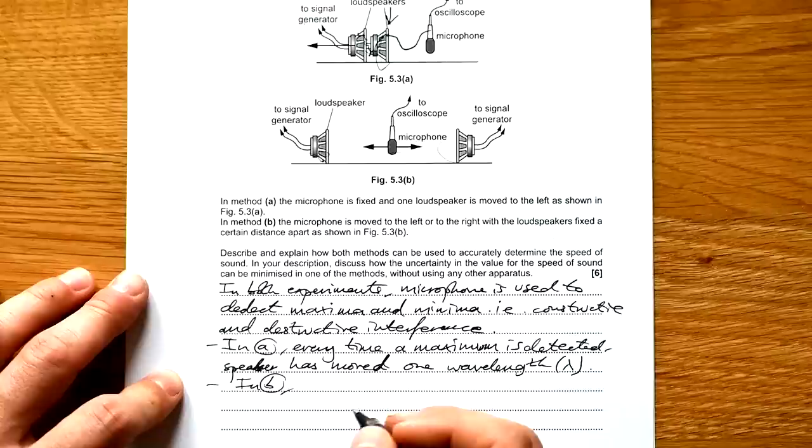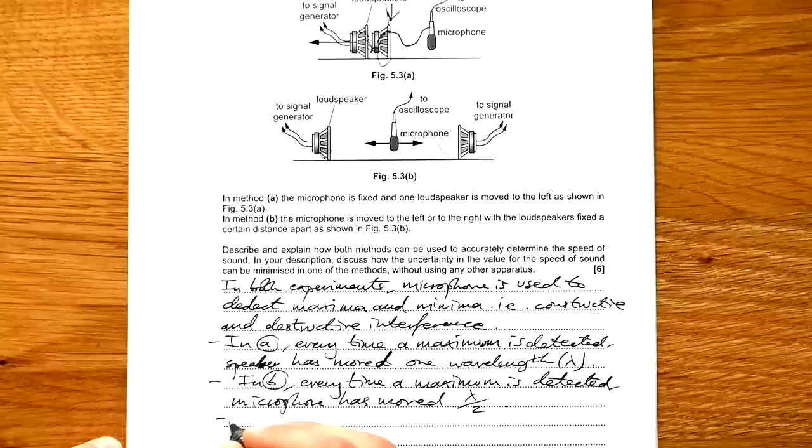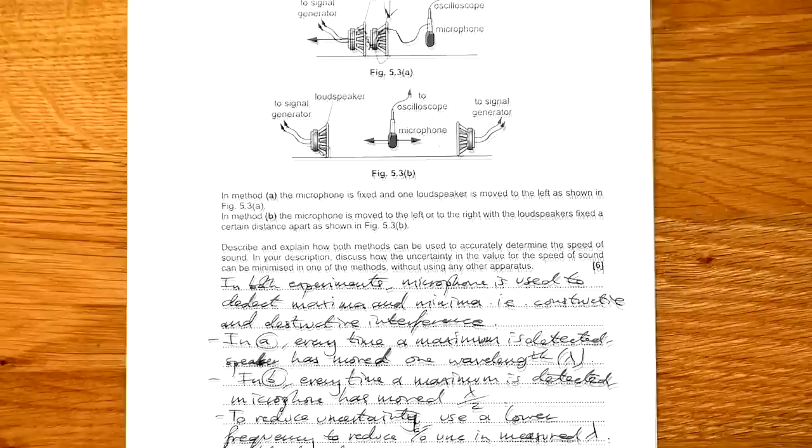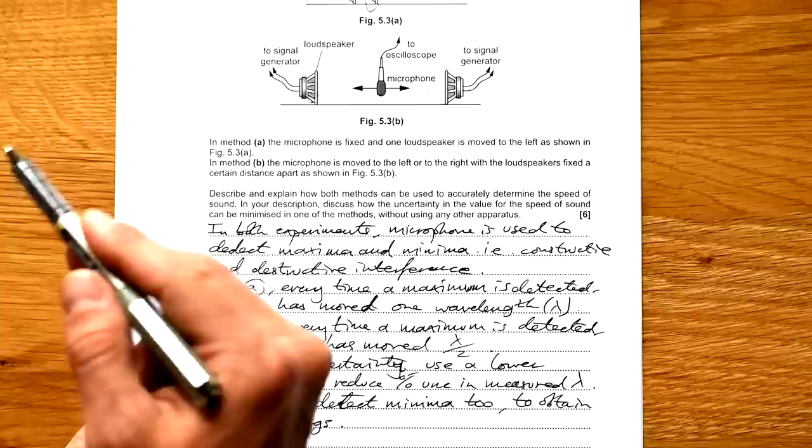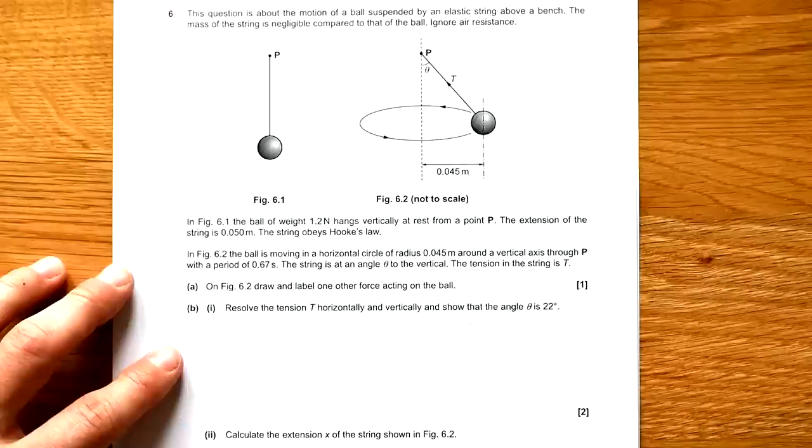That's because if we have speaker producing a wave here, we need other speaker to be producing a sound which ends up being in phase when it reaches the other loudspeaker. So it only works every wavelength, can't be half a wavelength, can't be anything else. In B, however, because if you're moving to the right, you're moving further away from this one, but you're moving closer to this one, it means that every time a maximum is detected this time, microphone has moved half a wavelength. So what could you do to reduce uncertainty? First of all, use a lower frequency to reduce percentage uncertainty measured wavelength. Could also detect minima too to obtain more readings. What else is going to happen? Well, you're going to have reflections off some other things in the room, maybe. Remove, reduce reflections from other surfaces.